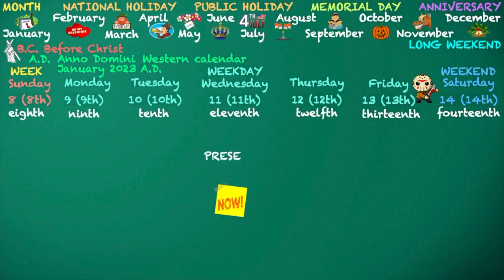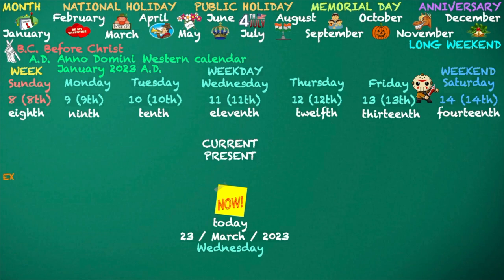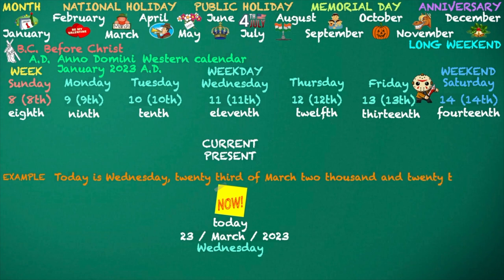Present. Current. Today. Wednesday. Example: Today is Wednesday, 23rd of March 2023 A.D.